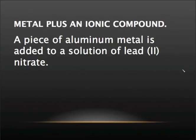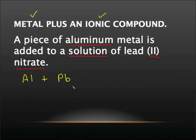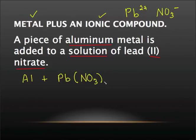Here is an example of a metal plus an ionic compound. We have a piece of aluminum and we are going to add it to a solution — that's a key word — of lead(II) nitrate. So let's write our formula: we have aluminum solid plus lead(II) nitrate. That means the lead is 2+; you have to know your polyatomics — nitrate is minus one. AP does not want to see charges on anything that's a neutral formula unit or compound. So lead(II) nitrate means I need two nitrates there: Pb(NO₃)₂.